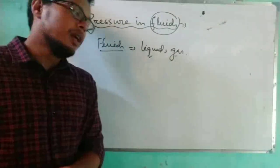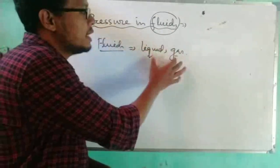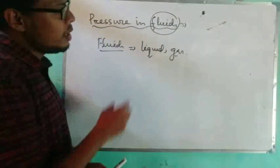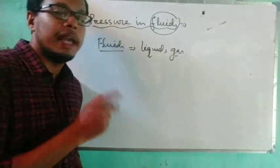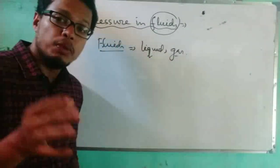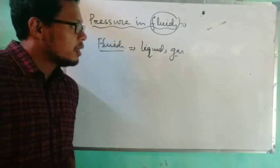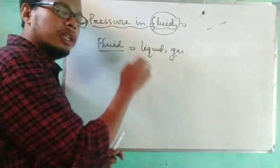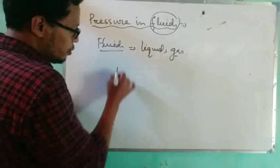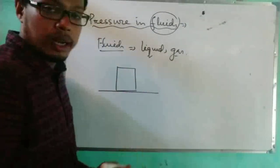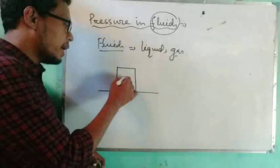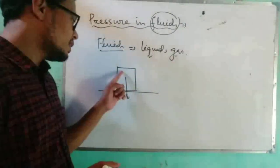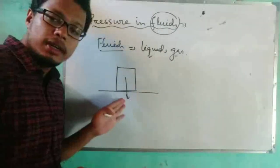What is the difference between pressure exerted by a fluid and by a solid? There are three states of matter: solid, liquid, and gas. If we consider a solid placed on the ground, the pressure exerted by the solid is in the downward direction, because the weight acts downward.